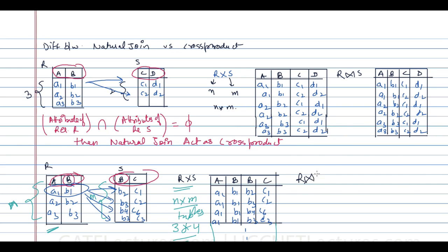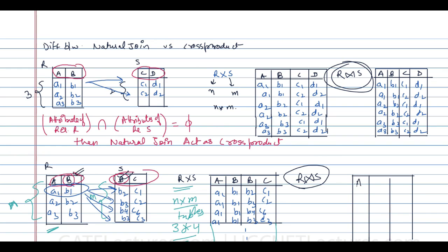But if you take R natural join S, it creates a difference. In natural join, since there is one common attribute B, we do not take that attribute twice — we get three attributes: A, B, and C. We only combine those tuples that have matching values of B. For example, B1 is in R but not in S, so that tuple is excluded. B2 is in both R and S, so those tuples combine to give A2 B2 C1.